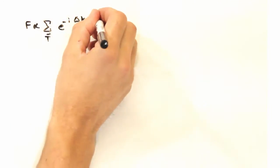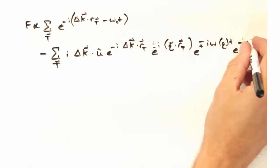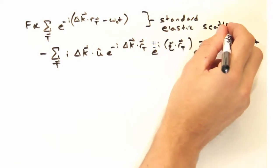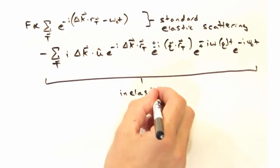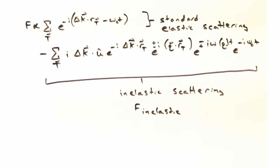Plugging all of this back in, we get this lovely expression here, which is composed of two parts. First, this summation here that should look pretty familiar. That's going to be the standard elastic scattering expression. And we have this nice second part here, which is the inelastic part. And that's really what we're focusing on today.